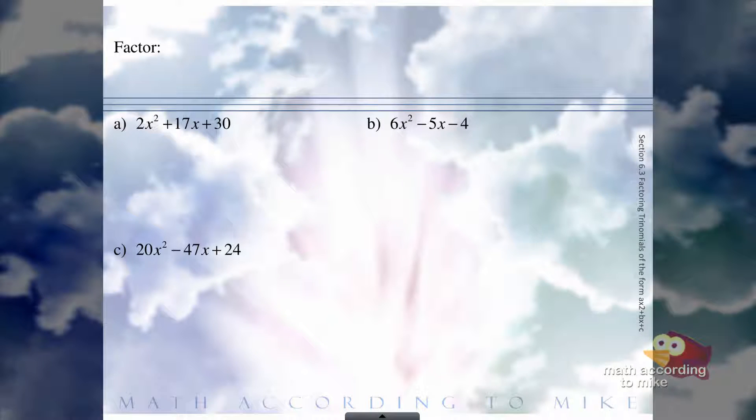So for this entire slide, these are all done the exact same way. We have a trinomial in the format ax squared plus bx plus c, and we're going to factor by grouping.